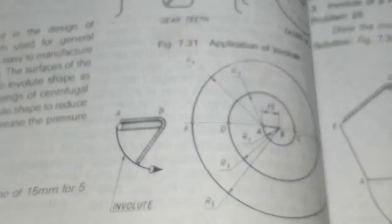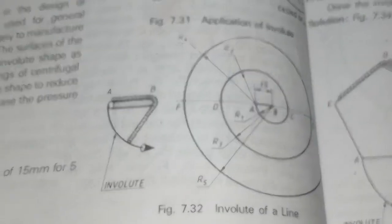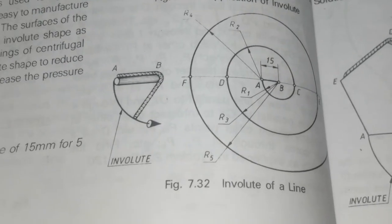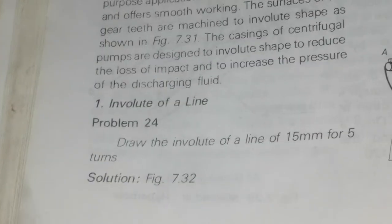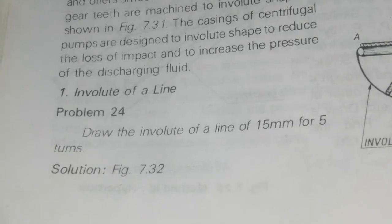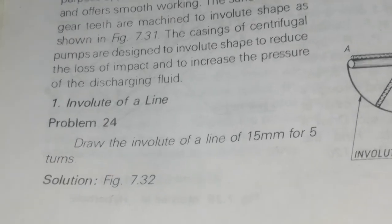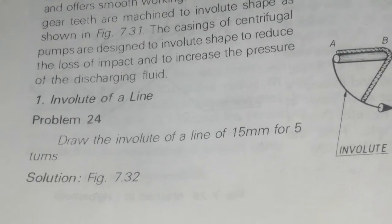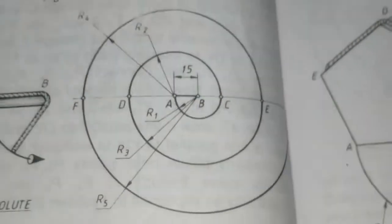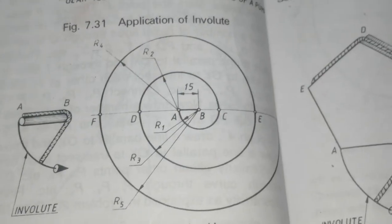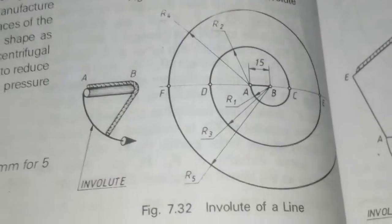Welcome to my channel MR Engineering Drawing. The question has been given the involute of a line. The problem is draw the involute of a line 15mm for five turns. The solution of the figure is 7.32, so the drawing will be like this. I will teach you how to draw the involute of an application.